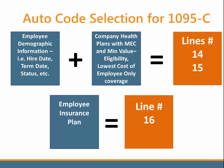Now that we know what Auto Code Selection is, let's talk about how it works. It takes the employee demographic information such as hire date, term date, etc., and with it, it takes a look at the company health plans that are set up with minimum essential coverage and minimum value. It determines if the employee is eligible for this plan, and of all the plans the employee is eligible for, which one has the lowest cost of the employee-only coverage. This information combined will complete the information needed for lines 14 and 15 of the 1095-C form. And for line 16, it takes a look at the employee's insurance tab to see what plan the employee is enrolled in.